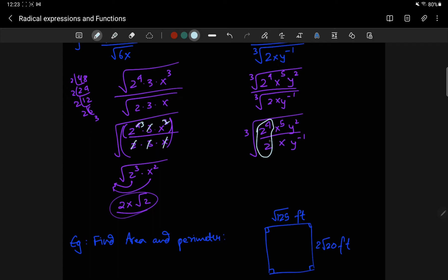2 to the 4 over 2 to the 1 is 2 to the 4 minus 1, which is 2 cubed. x to the 5 minus 1 is x to the 4, and then y to the 2 minus negative 1 becomes y to the 2 plus 1, which is y cubed.